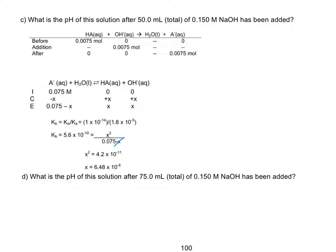Using that OH⁻ concentration: pOH = −log(6.48 × 10⁻⁶) = 5.189, so pH = 14 − 5.189 = 8.81. When we have a weak acid and a strong base, at the equivalence point we have a substantial concentration of conjugate base, so the pH is always above 7. If the acid is weak, the pH at the equivalence point is above neutral.